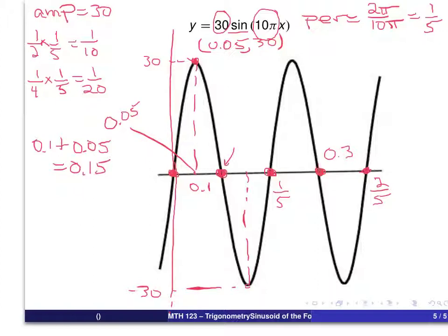So that comes out as 0.15. And that gives us then the coordinates of the low point. The x-coordinate will be 0.15 and the y-coordinate will be minus 30.